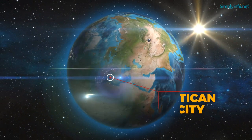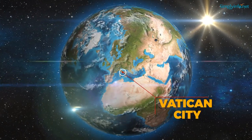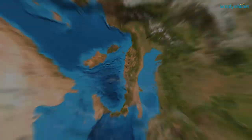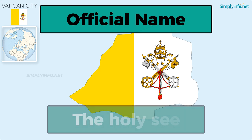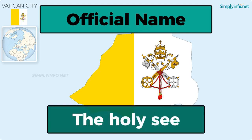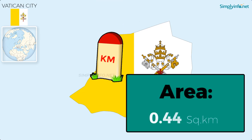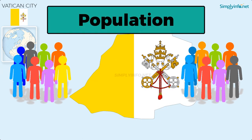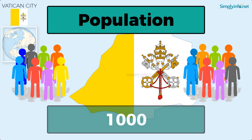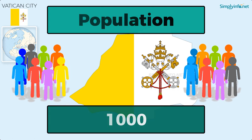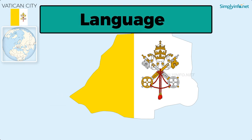Name: Vatican City. Official name: The Holy See. Area: 0.44 square kilometers. Population as of 2017: 1000. Language: Latin.